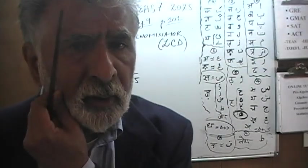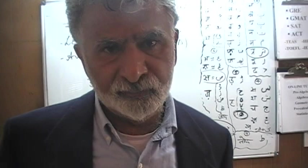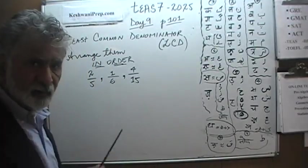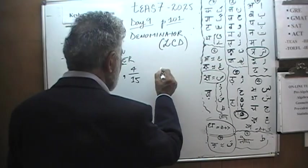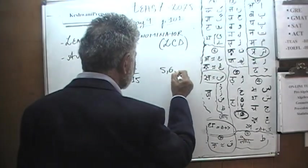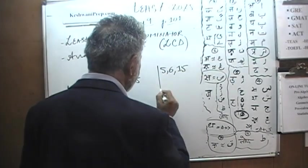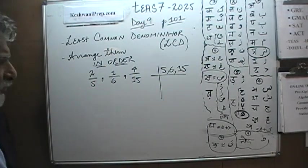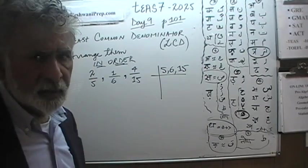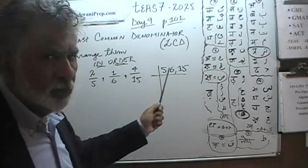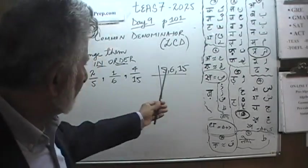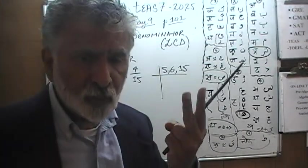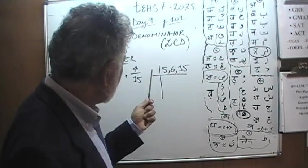Here's the way to figure it out. So you write down your 5, 6, and 15. And you start with the smallest number. Can we divide them by 2? The answer is no. Only one number goes by 2. At least 2 of them has to be divisible by whatever you are going to put here.